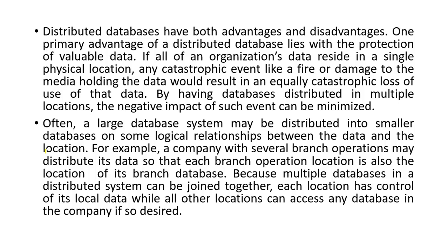Often, a large database system may be distributed into smaller databases based on logical relationships between the data and the location. For example, a company with several branch operations may distribute its data so that each branch operation location is also the location of its branch database. Because multiple databases in a distributed system can be joined together, each location has control of its local data, while other locations can access any database in the company if desired.